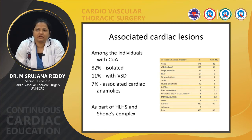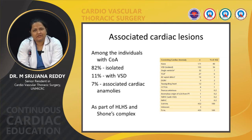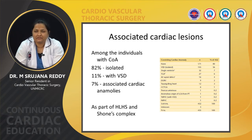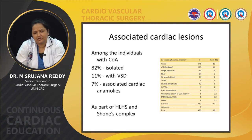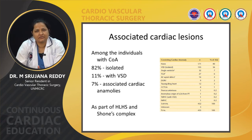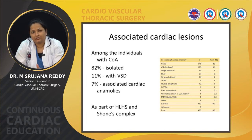Coarctation of aorta can be a common occurrence in DORV, TGA, AV septal defects, and single ventricle hearts, among other anomalies listed according to their prevalence. In cases with pulmonary diseases with pulmonary stenosis, such as tetralogy of Fallot or pulmonary atresia, the occurrence with coarctation is of lower prevalence.